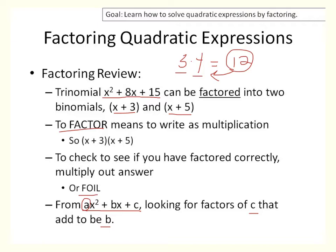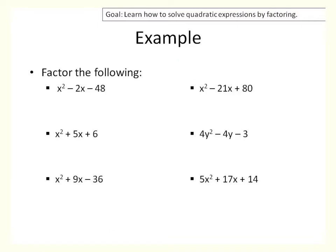So let's see if you remember how to factor. Here's some examples. The first one is x squared minus 2x minus 48. I would suggest you start by drawing two sets of parentheses. The first question is: what times what is going to multiply to be x squared? That's x times x. And then what you put here is going to multiply to be negative 48, which means you're going to have to have one of each sign.